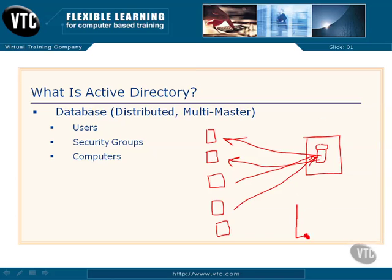Then I can add another server later on and put a copy of that Active Directory database on this server as well. Users can connect to this server and get Active Directory information. Active Directory between these two copies will replicate and keep itself up to date on both sides. So that's what Active Directory is storing: information about all my users, my security groups, and computers.